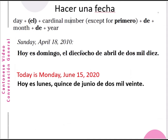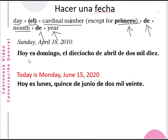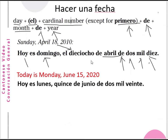Hacer una fecha — how to express a date in Spanish. You put the day of the week first, then 'el,' then the cardinal number of the date (except the first, which uses primero), then 'de,' then the month, then 'de,' then the year. For example, if today is Sunday, April 18, 2010: 'Hoy es domingo, el dieciocho de abril de dos mil diez.' Today is Sunday, the eighteenth of April, of 2010.